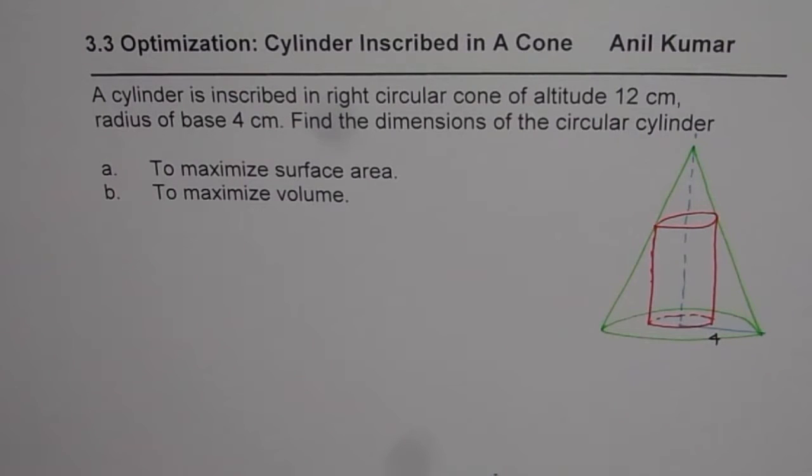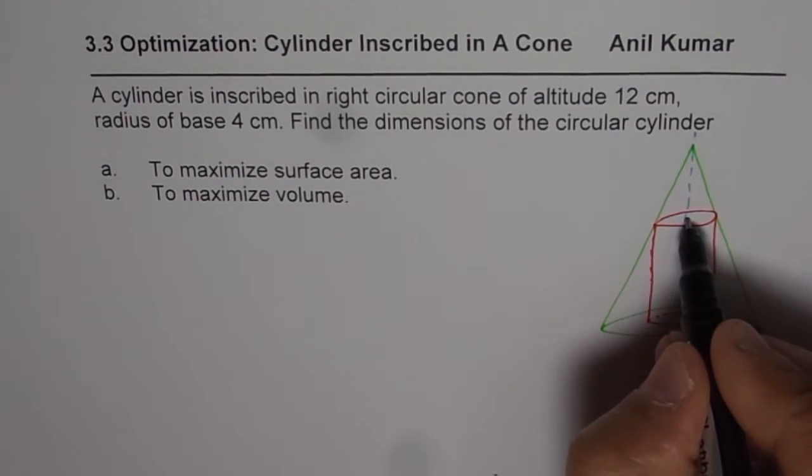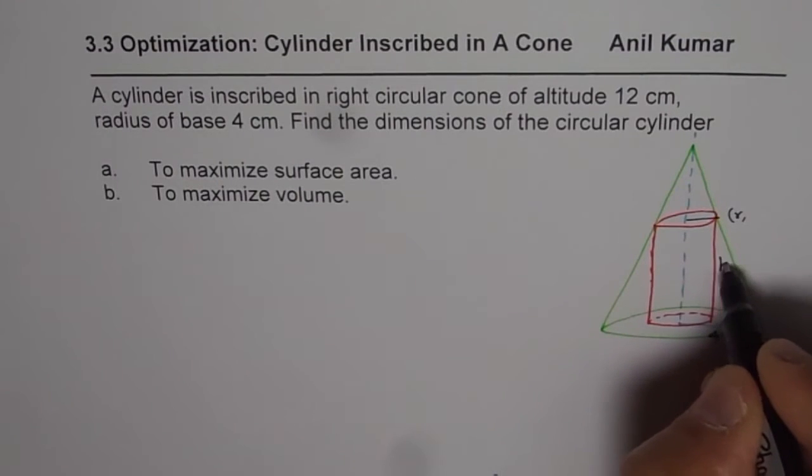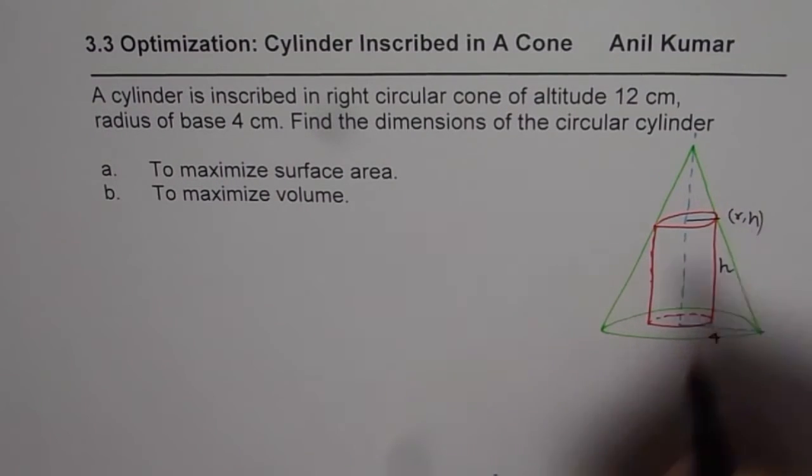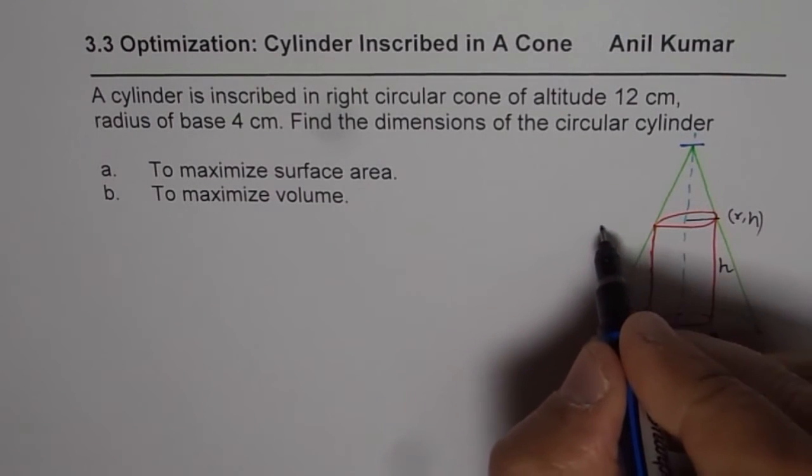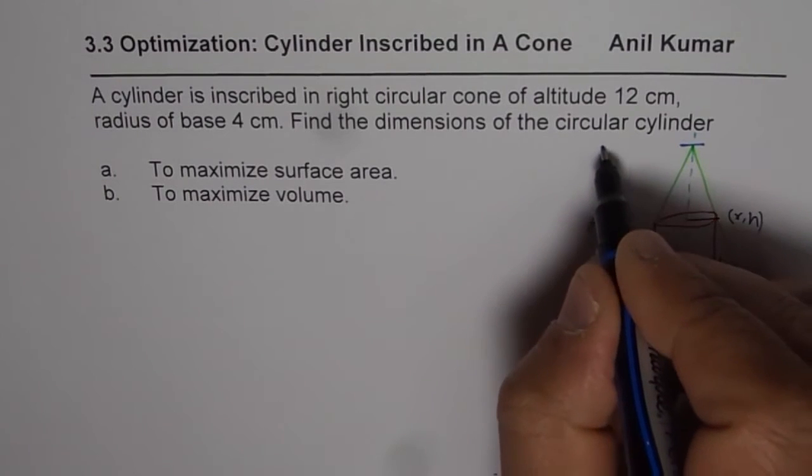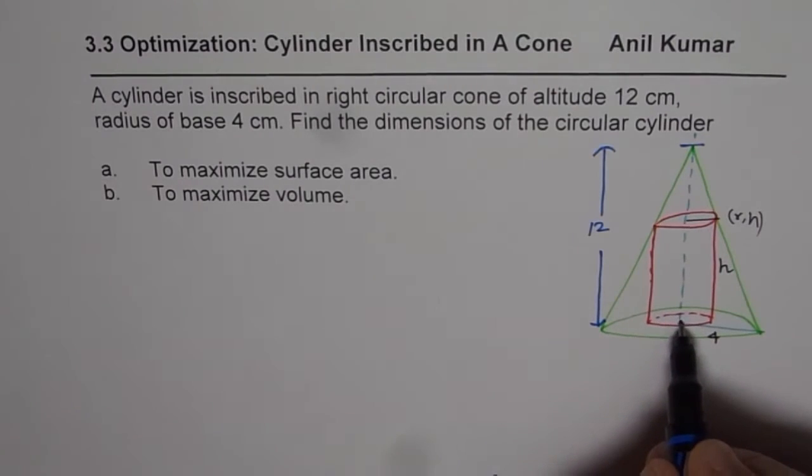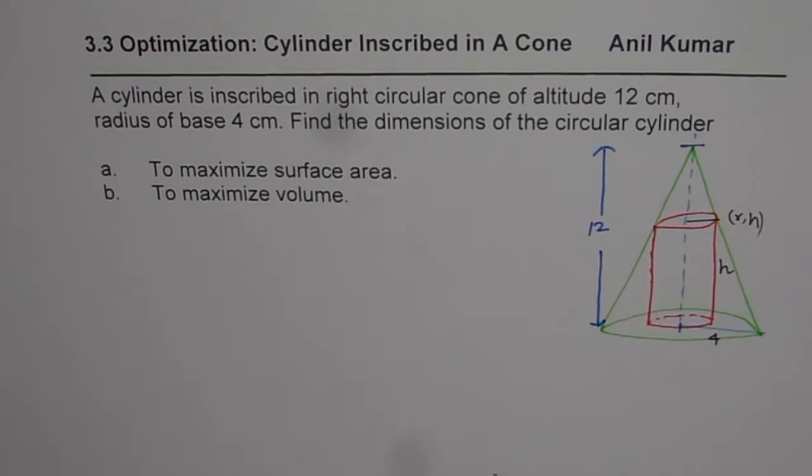Whenever we talk about cylinder, we are interested in two dimensions. One of them is the radius. So let us say the radius is r and then height. So let us say height of our cylinder is h. So those are the dimensions which we need to figure out. And for the given cone, we know that this height is 12 and 4 is the base. So these dimensions are given to us for the cone.